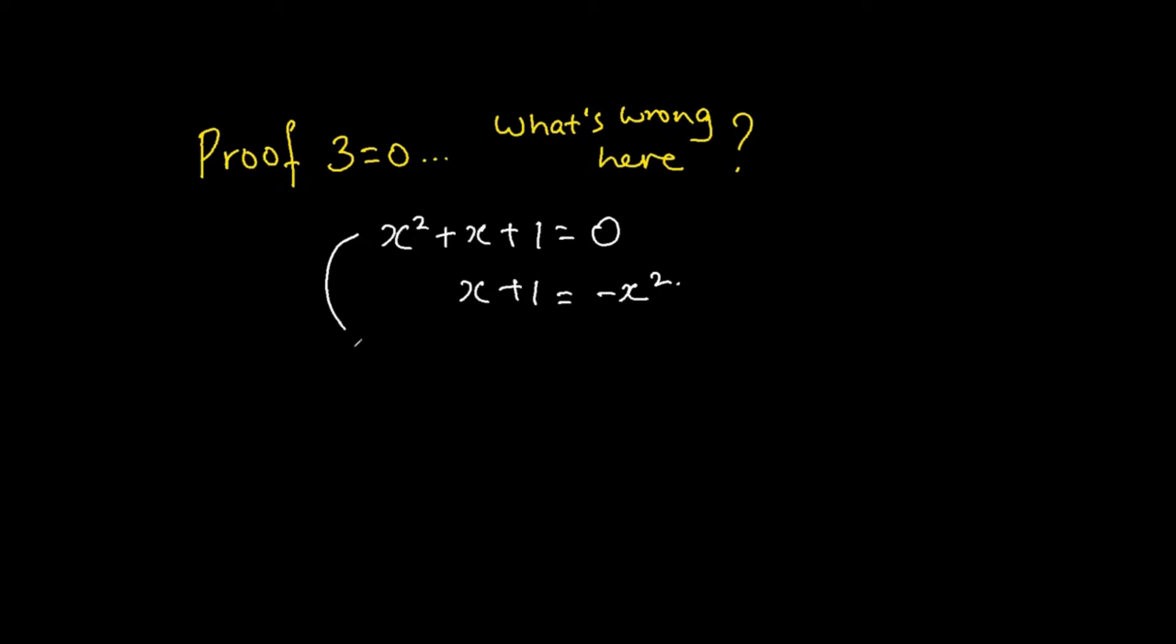And then from here itself, I can do another factorization of these first two terms. So I will get x bracket x plus 1 plus 1 is equal to 0.